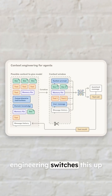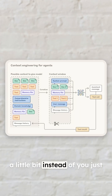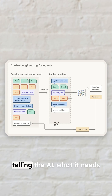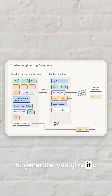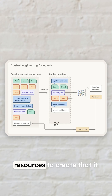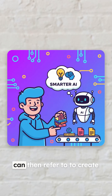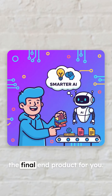Context engineering switches this up a little bit. Instead of just telling the AI what it needs to do or what you want it to generate, you give it a collection of documents and resources that it can then refer to in order to create the final end product for you.